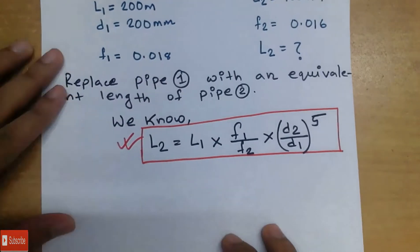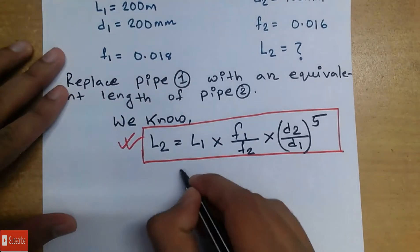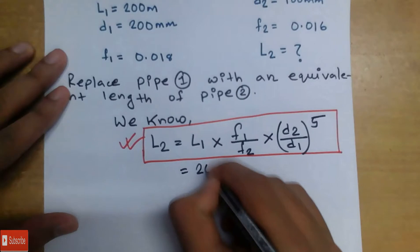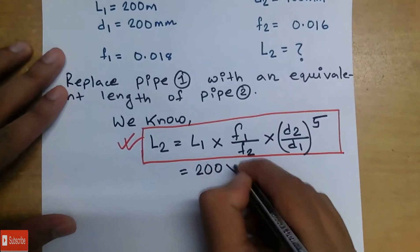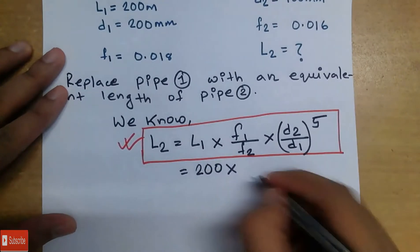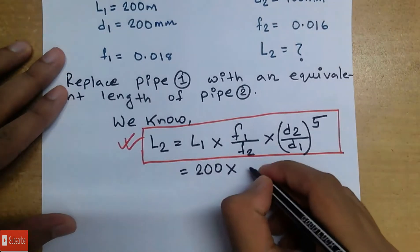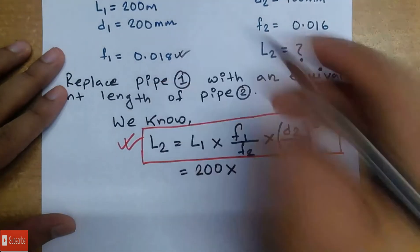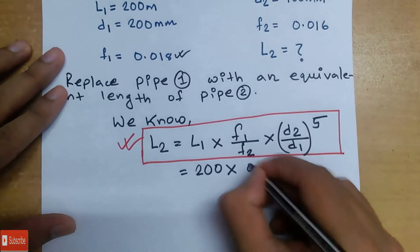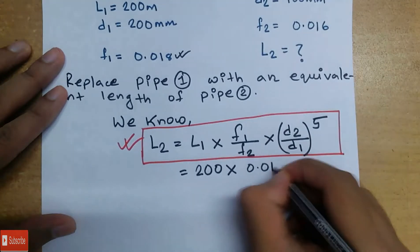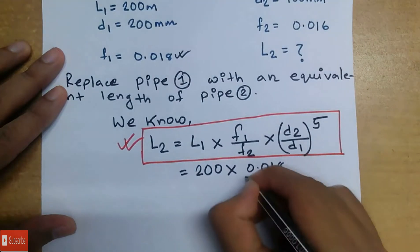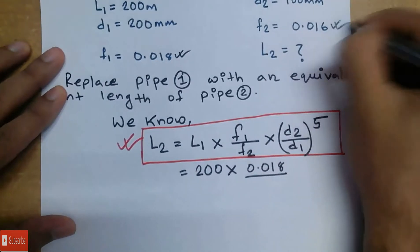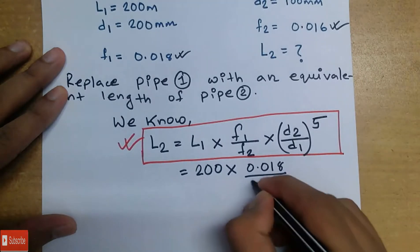First of all, L1 is equal to 200 meters, f1 is equal to 0.05, and f2 is equal to 0.016.